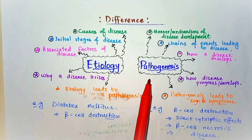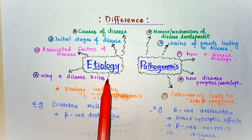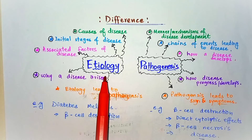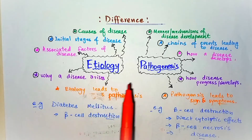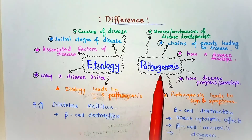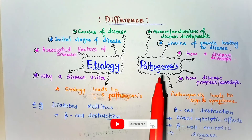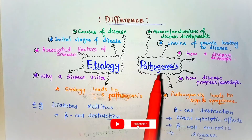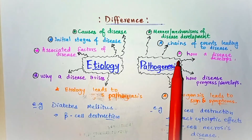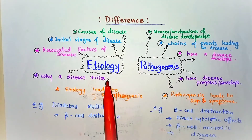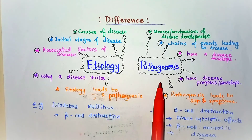Etiology and pathogenesis. Etiology is the study of the cause of a disease or any abnormality in the body. In pathogenesis, we discuss the manner or the mechanisms of disease development. These are the basic definitions of etiology and pathogenesis.